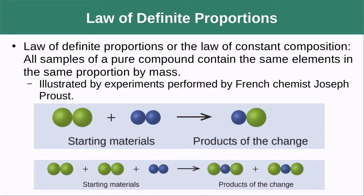We can see this illustrated here: in the first example, we have equal numbers of green balls and blue balls, and we wind up with a product that has equal numbers of green and blue balls. In the second example, we have twice as many green balls as blue balls, and we wind up with a product that has twice as many green as blue balls.